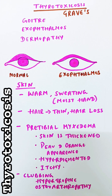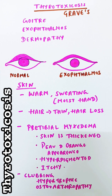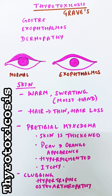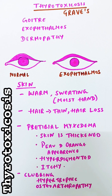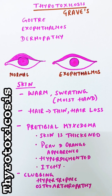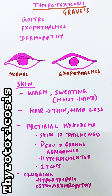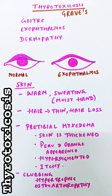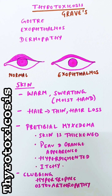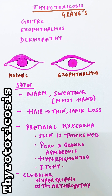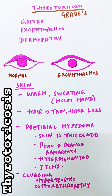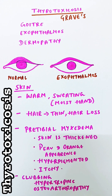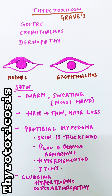Dermopathy means involvement of the skin. The skin will be warm, the patient has moist hands, and there will be hair loss. The patient has pretibial myxedema where the skin is thickened. It has a peau d'orange appearance and the skin would be thickened and hyperpigmented. It will also be itchy.